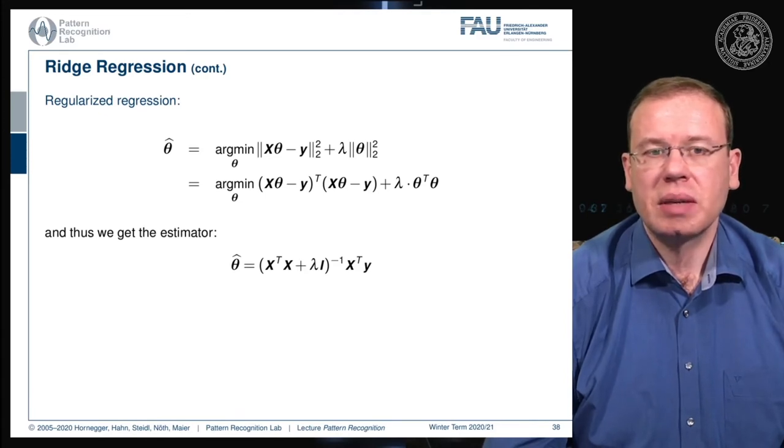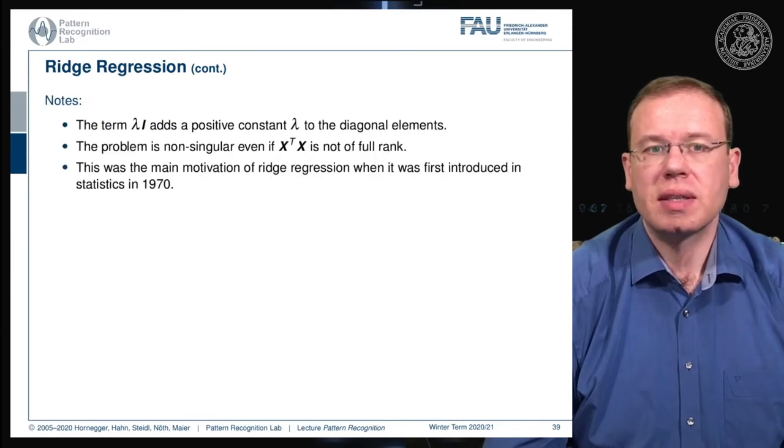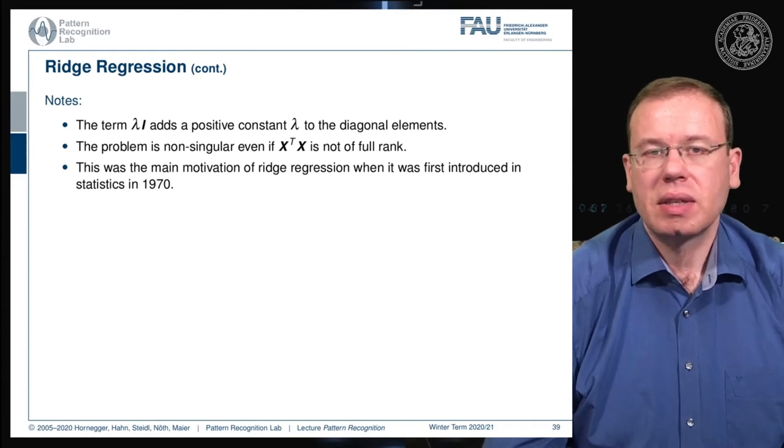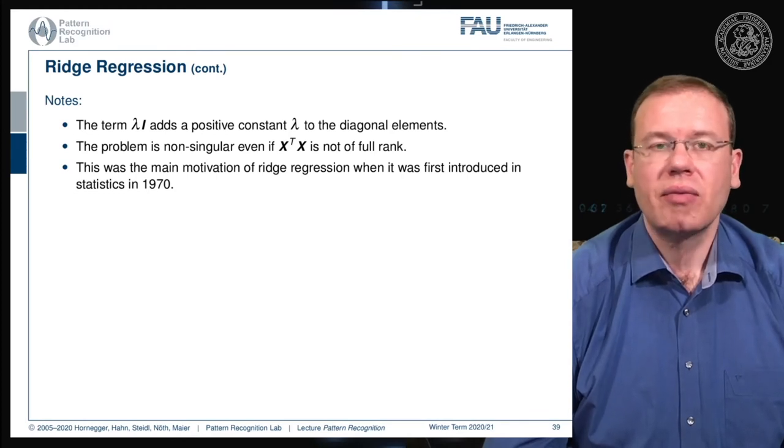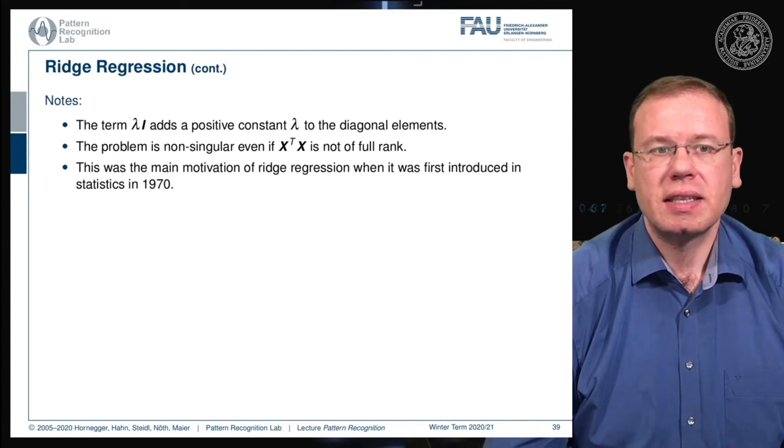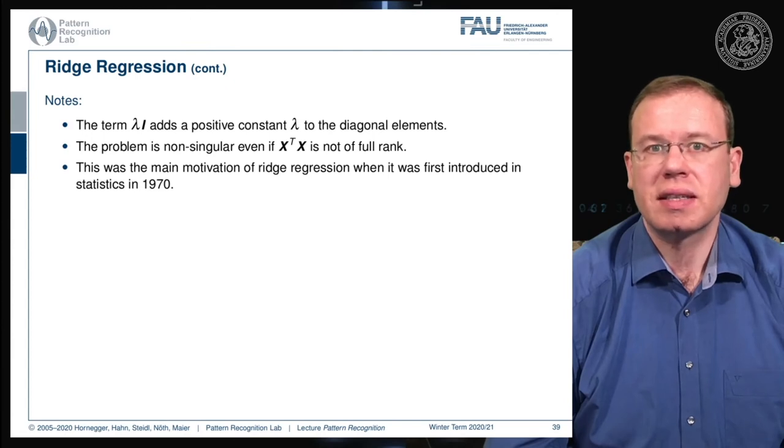Theta hat can be computed as x transpose x plus lambda times the identity matrix, and the whole term inverted times x transpose y. If you compare this to the classical pseudo-inverse, we essentially have only the lambda times the identity matrix added. This means you're adding a small positive constant to the diagonal elements. This has a very nice result, because then the problem is non-singular, even if x transpose x is not full rank. Because you add this small constant to the diagonal, this will cause your problem to suddenly have full rank. This was the main motivation of ridge regression when it was first introduced in statistics in 1970.